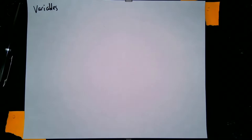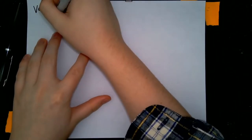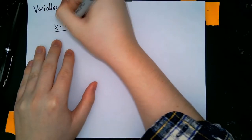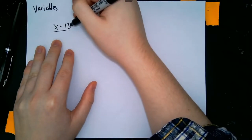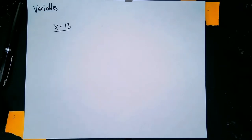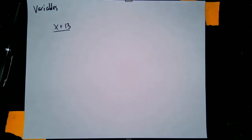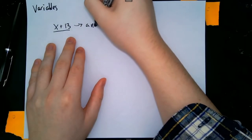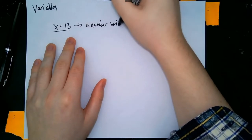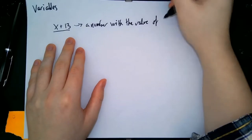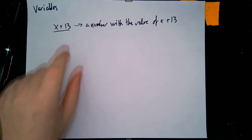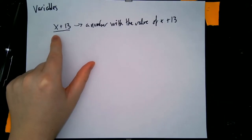When talking about numbers, we can also look at variables. I can say something like x plus 13. We know we're doing an addition operation on 13 and some value x. We don't know exactly what x is yet, but whatever x happens to be, whenever we give x a value, the result of this statement will be a number with the value of x plus 13.